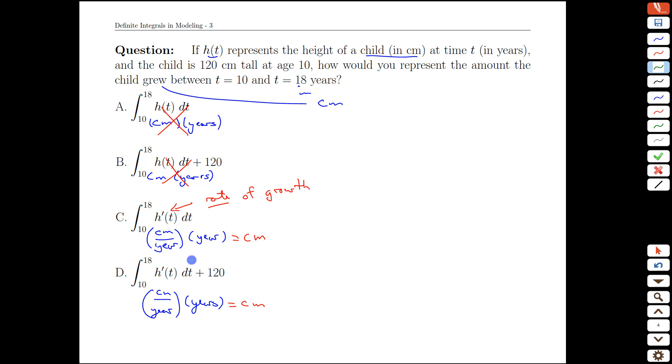Having reduced the options to c and d here, we notice the only difference is whether we add the 120 centimeters, which is their height at age 10. But think back to what we saw earlier in the previous example. If we integrate a rate of growth, we get a change in height. That's what we mean by the net change being equal to the integral.